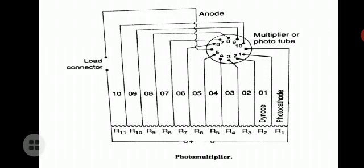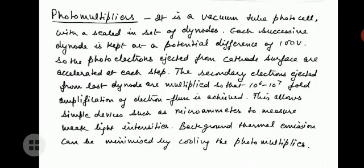Now let us study the photomultiplier. It is a vacuum tube photocell with a sealed-in set of dynodes. Each successive dynode is kept at a potential difference of 100 volts, so the photoelectrons ejected from the cathode surface are accelerated at each step. The secondary electrons ejected from the last dynode are multiplied so that 10⁶ to 10⁷ fold amplification of electron flux is achieved. This allows simple devices such as a microammeter to measure weak light intensities. Background thermal emission can be minimized by cooling the photomultiplier.